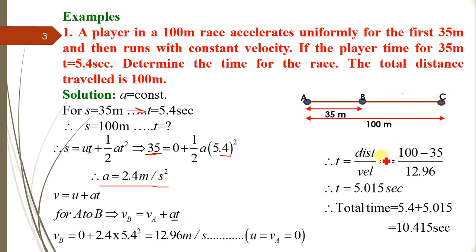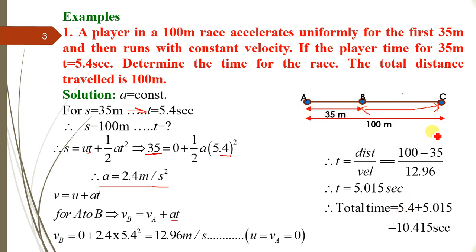The time for B to C equals distance divided by velocity. The remaining distance is 100 − 35 = 65 m, and velocity is 12.96 m/s, giving t = 5.015 seconds. Therefore, the total time to complete the 100-meter race is 5.4 + 5.015 = 10.415 seconds.